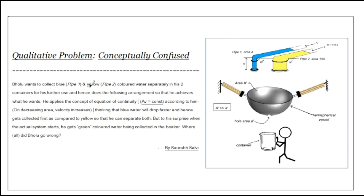Let me explain what he is thinking. Here we have blue water and here we have yellow water. As you can see, the area of the blue water pipe is A and the area of pipe two is 10A — so pipe one is smaller and pipe two is bigger. He thinks that blue water will drop down faster as compared to yellow water because the area of pipe one is small.